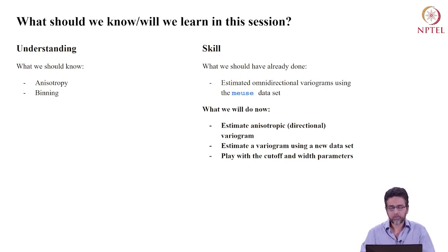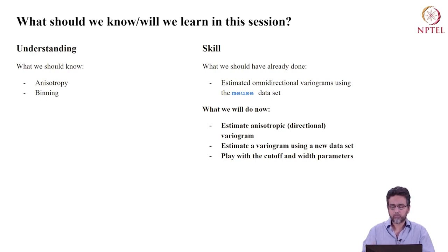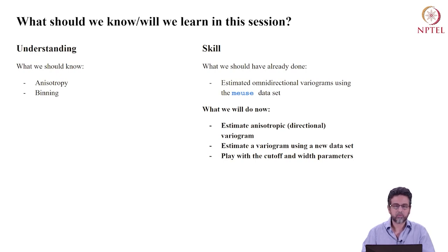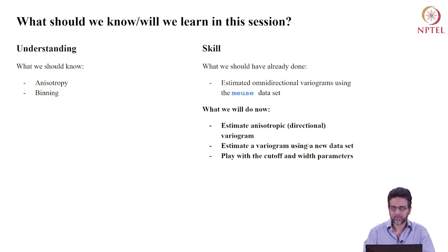Skill-wise, you should have already estimated an omnidirectional variogram — where direction plays no role and spatial variation is assumed the same in all directions. This is rarely ever true but that is what we did in the prior video, and you should know how to do it because we're going to build on top of this. You know the Meuse dataset already. This time we will add the idea of direction or anisotropy to our variogram estimation and play with cutoff and width parameters.